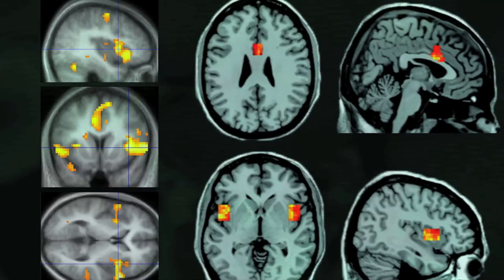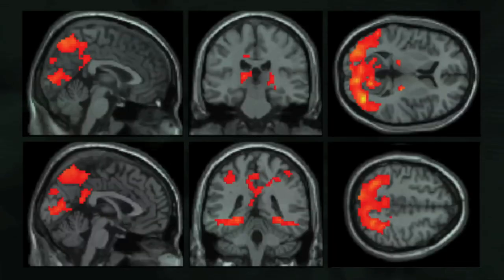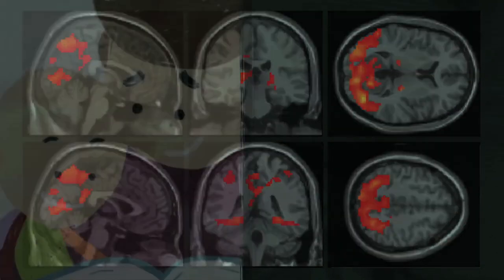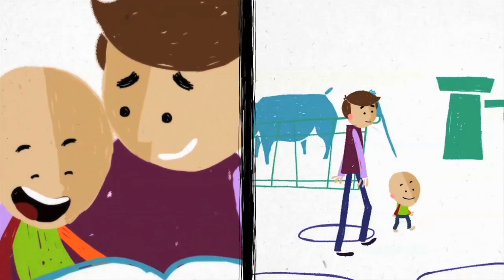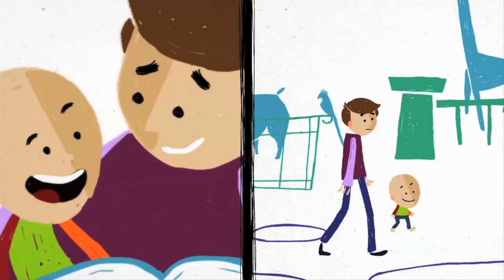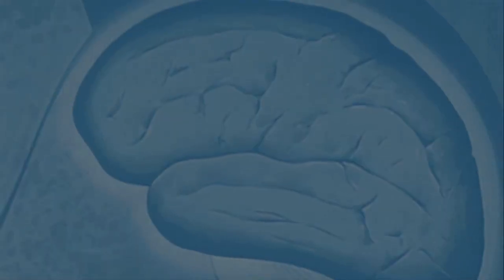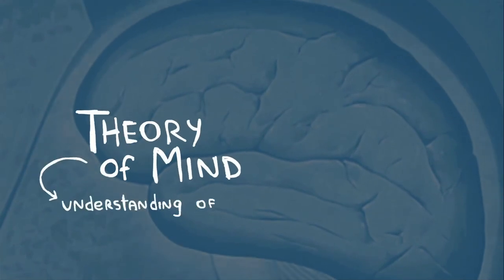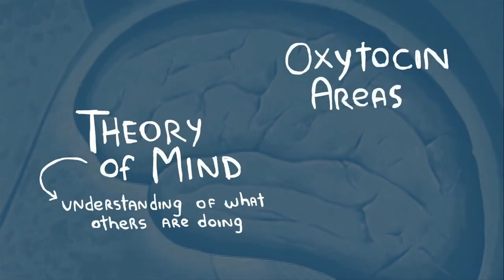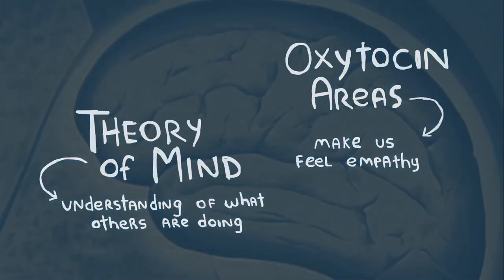So, we began to investigate this story further. We used functional brain imaging to identify the regions in the brain that were most active while watching that video compared to a control video in which Ben and his father are at the zoo. And what we found was that the most active areas for the emotional story were areas in the brain associated with theory of mind or understanding of what others are doing, and areas that are rich in oxytocin receptors that make us feel empathy.